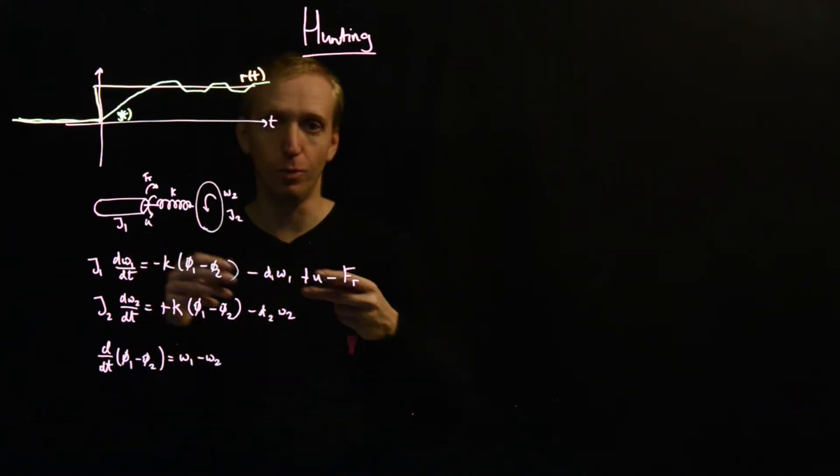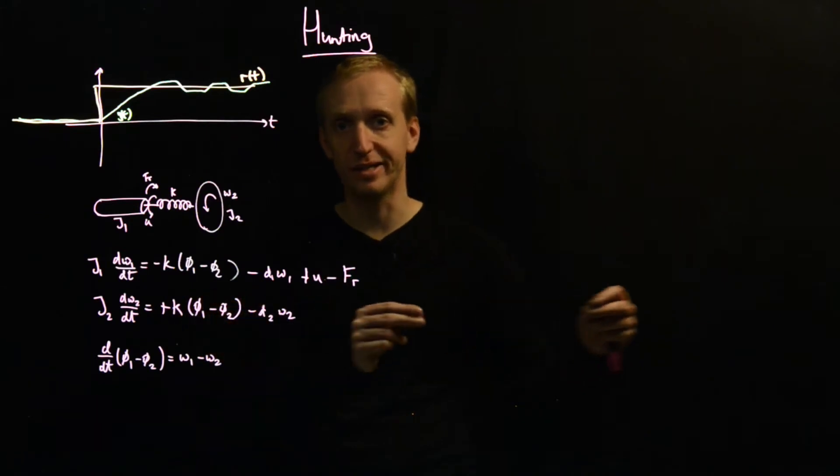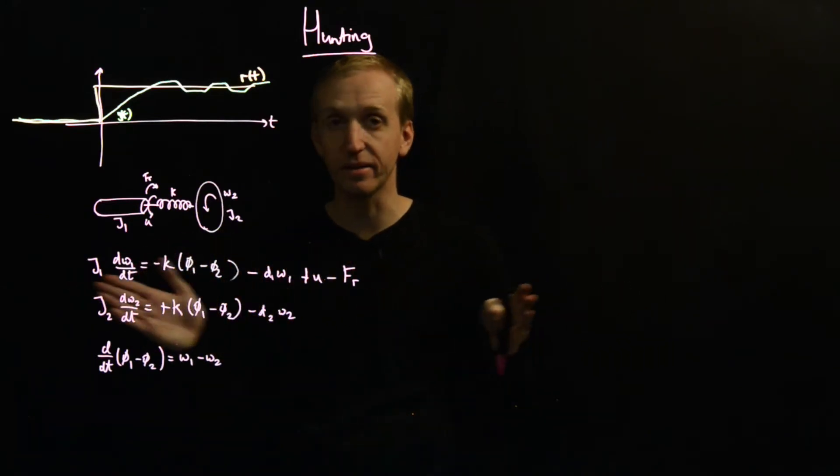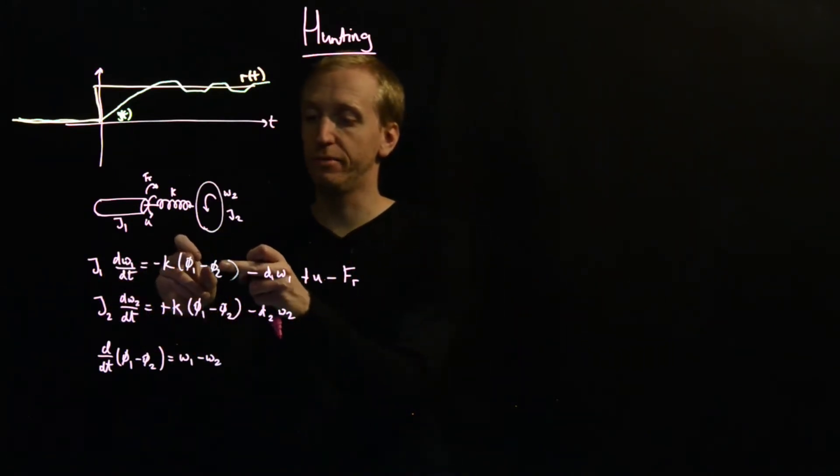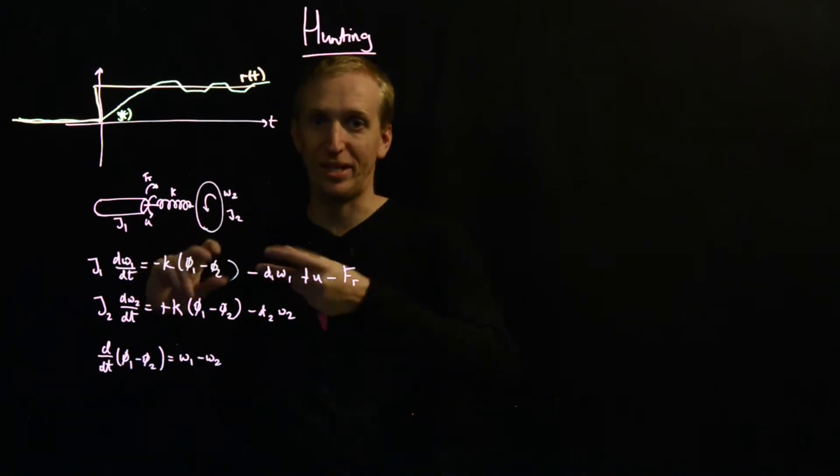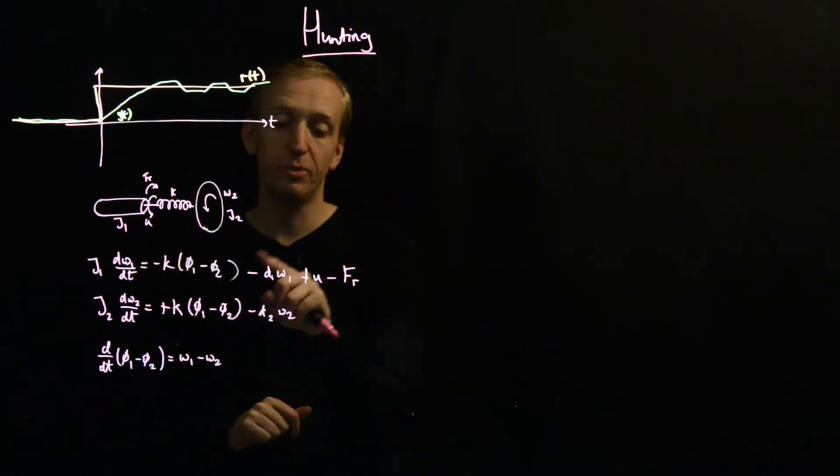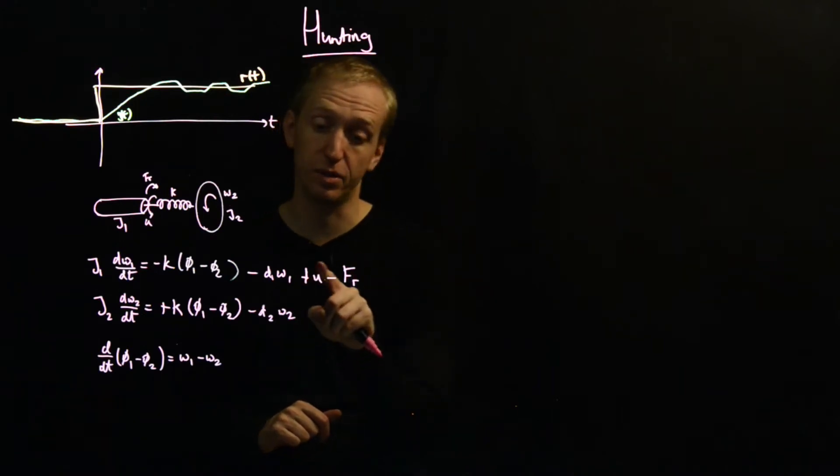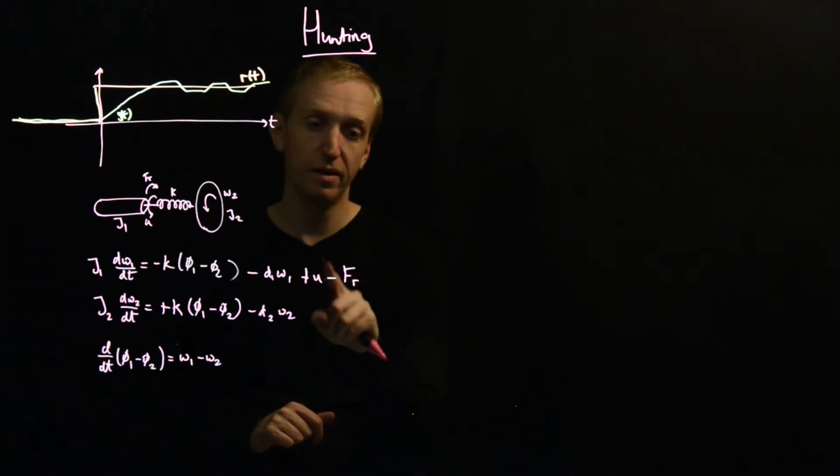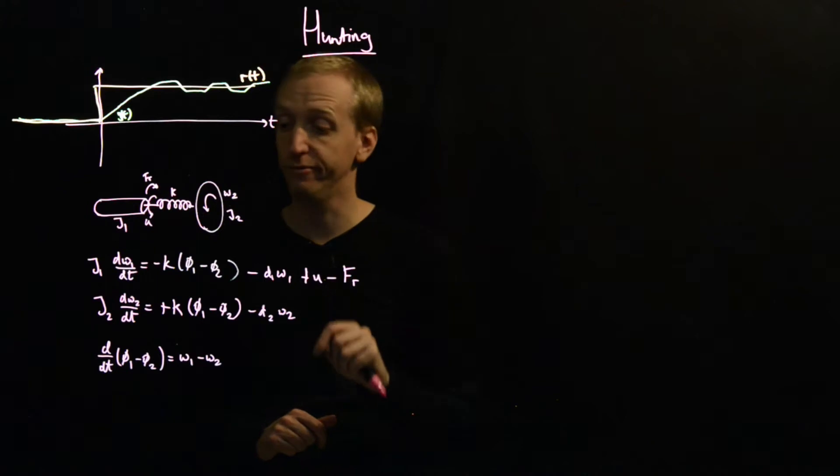And so just like a normal spring, the force is proportional to the relative, well, the length of the spring. This is the force is proportional to the relative twist, if you like. Then we have some damping. And then these are the external forces. So we have the force that we're applying with the motor. And we have this troublesome friction force here.